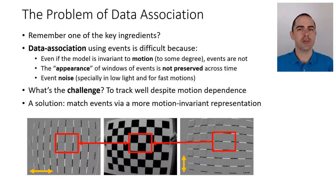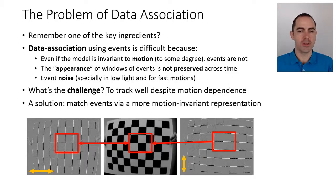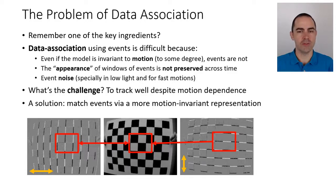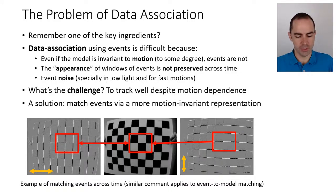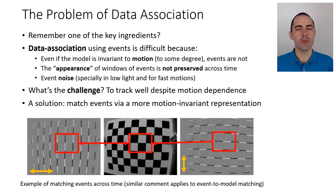What could this motion-invariant representation be? It could be absolute intensity or a grayscale image — a frame. We could use a DAVIS sensor, or even recreate frames from image intensity reconstruction algorithms. This is an example of matching events across time using images, and it applies to event-to-model matching in tracking algorithms.